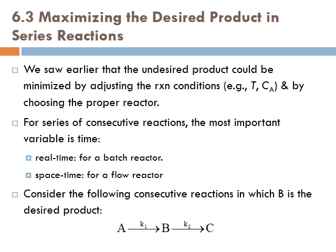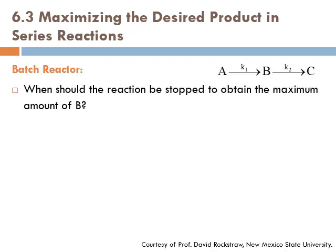Consider the following consecutive reactions in which B is the desired product: A goes to B in the first reaction, and then B goes to C in the second reaction — this is a series reaction. Starting with a batch reactor, the question is: when should the reaction be stopped to obtain the maximum amount of B? In other words, we need to find the optimum reaction time.